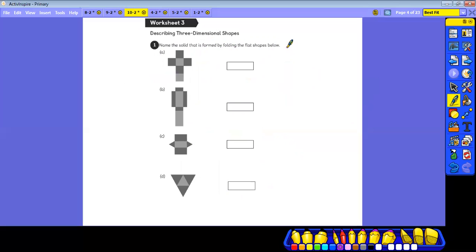And really, it's just checking that you've understood what you've done in the in-focus and guided. Name the solid shape that is formed by folding the flat shapes below. So what shape are you going to make from this flat shape? What 3D shape? Look at the shape of each face. Each face is a square. And how many faces? One, two, three, four, five, six. We've got one, two, three, four, five, six square faces. So we know that that will be a cube, don't we, children?